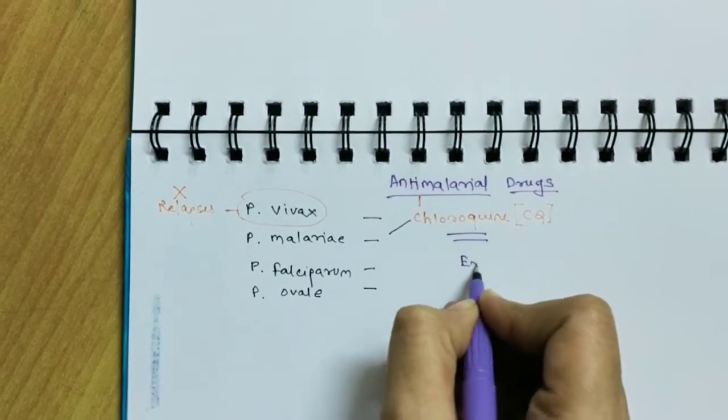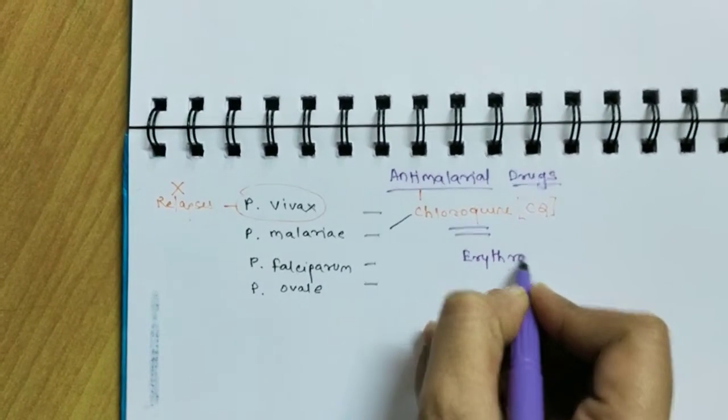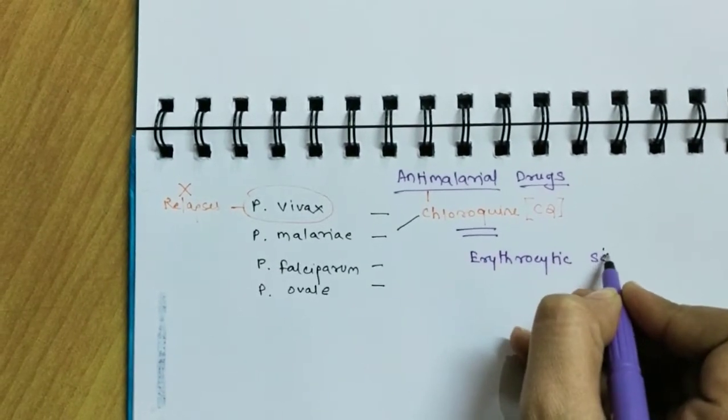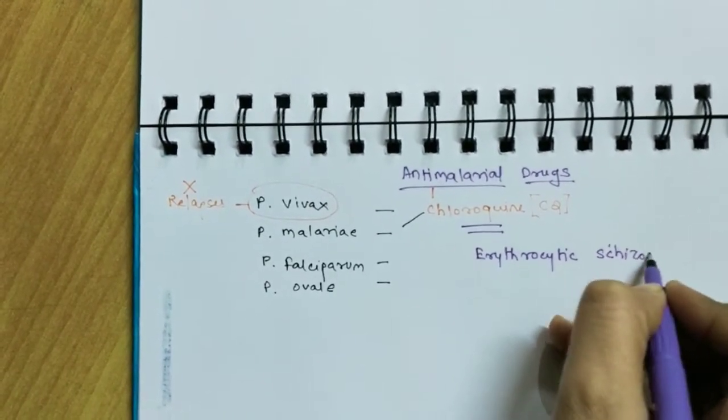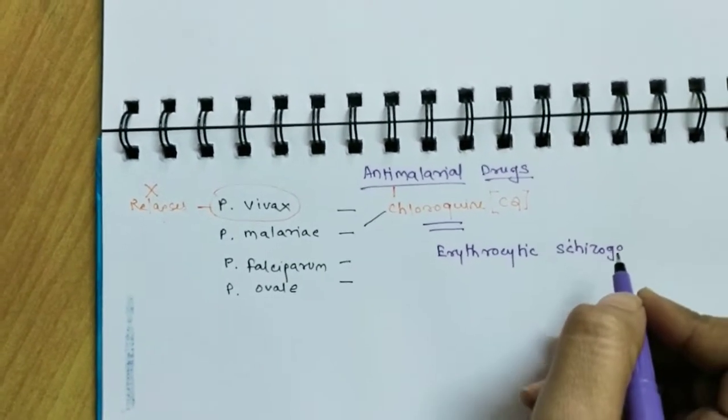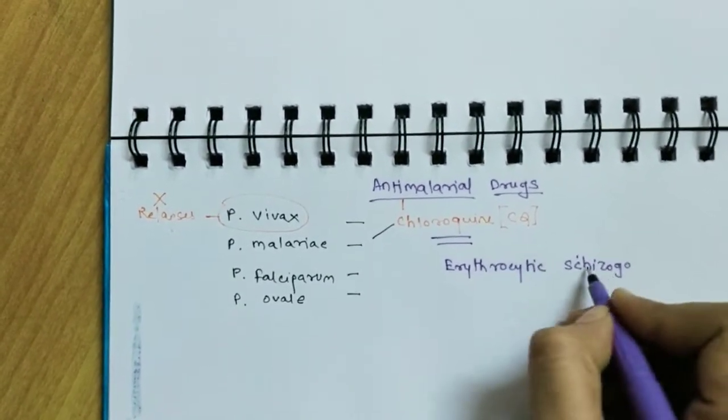Now chloroquine acts on the erythrocytic schizontocide. Erythrocytic schizontocide means it's actually killing the schizonts within the erythrocyte, obviously.